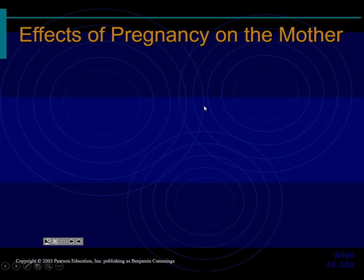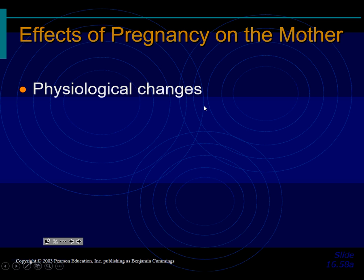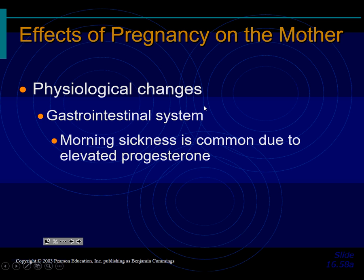The mother has some physiological changes. In the stomach and intestines region, you probably know about morning sickness. Morning sickness is very common due to elevated levels of progesterone, they think. Because your ovary is producing excess progesterone than you're used to, they think that's what causes morning sickness.